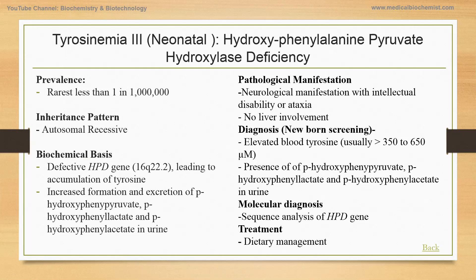The pathological manifestations include neurological findings with intellectual disability or ataxia, and there is no liver involvement. This is even milder than the other two tyrosinemias, with elevated blood tyrosine levels of 350 to 650 micromoles. The presence of parahydroxyphenylpyruvate, phenyllactate, and hydroxyphenylacetate in urine is suggestive, and confirmation is done by sequence analysis of the hydroxyphenylpyruvate hydroxylase gene. Treatment is dietary management.